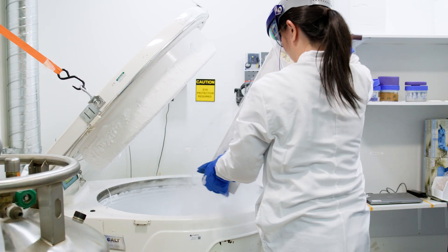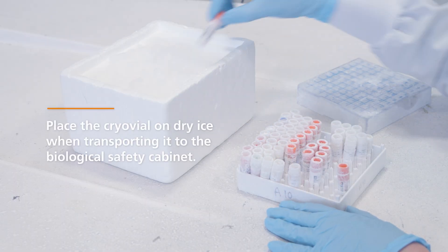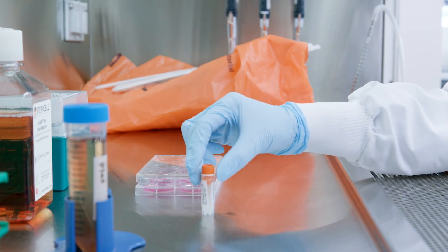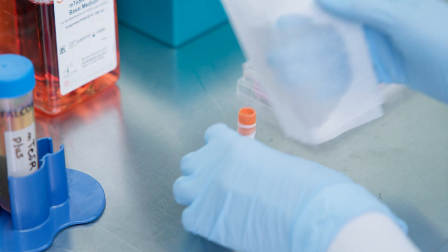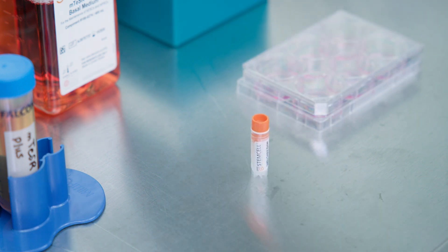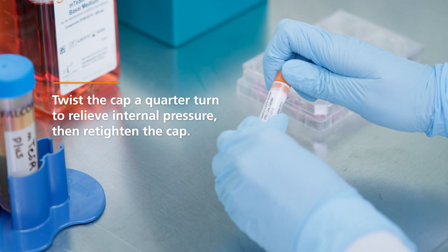Begin by taking the vial from the cold storage unit and place it on dry ice when transporting it to the biological safety cabinet. We recommend thawing one vial of cells at a time. Wipe the outside of the vial with 70% ethanol or isopropanol. Twist the cap a quarter turn to relieve internal pressure, then re-tighten the cap.